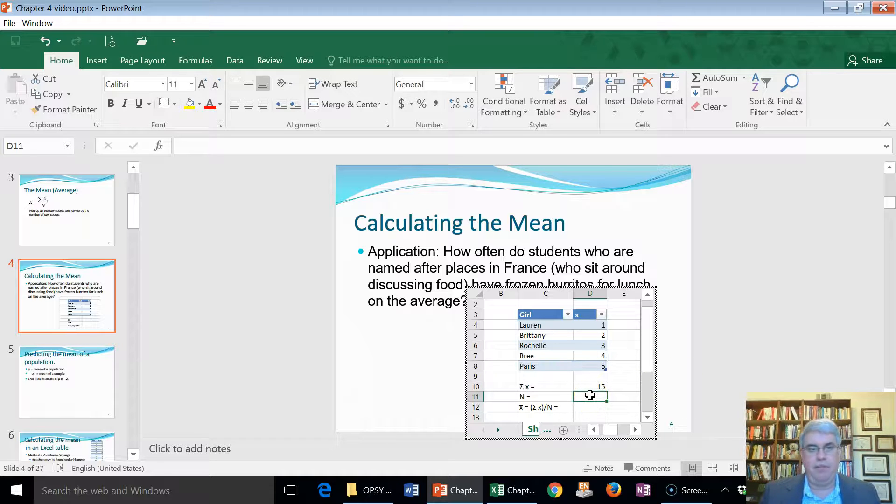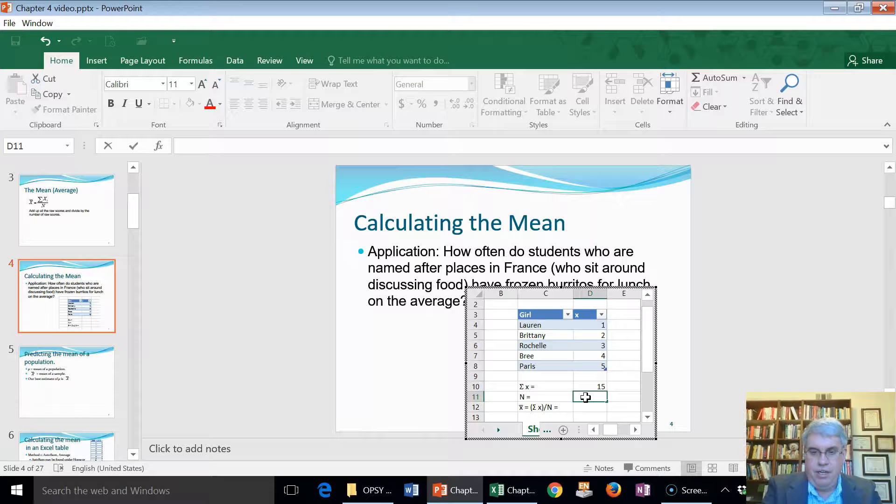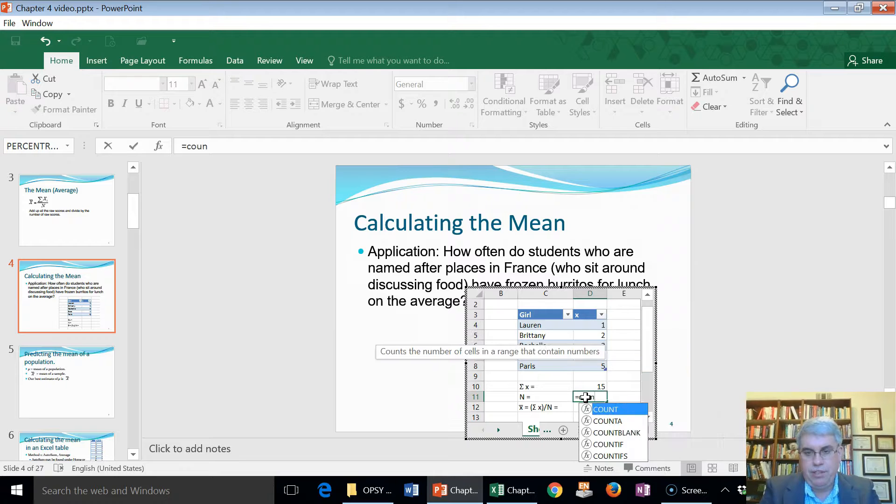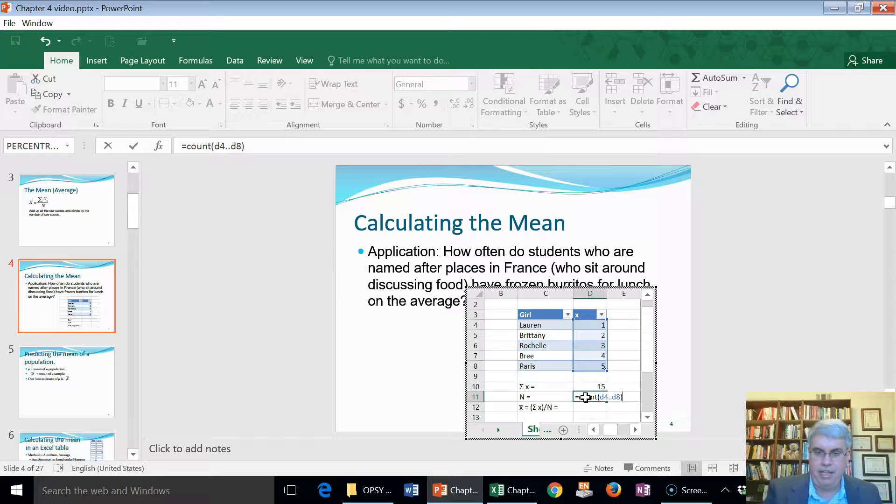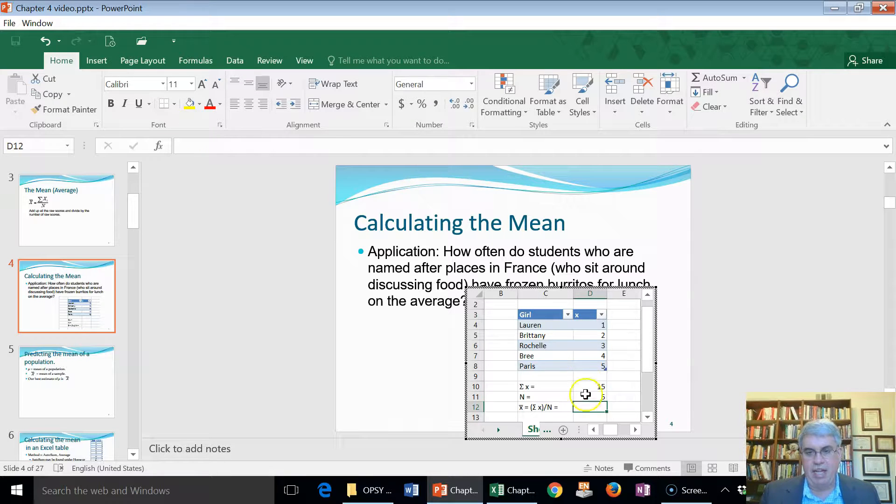Now n is the number of data points we have, the number of participants. I could just count them, but we also have an Excel command for this, and that's the count command. So I'm going to enter an Excel command equals count, and we're going to go from D4 down to D8. So that's two dots, D8, close parentheses, and that will count everything in that range. And that way if I were to add scores to it, they would get added into the count there.